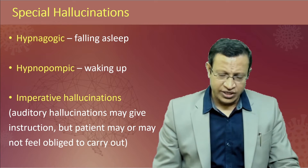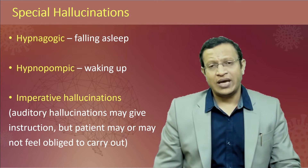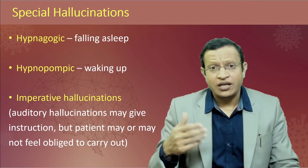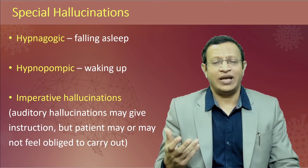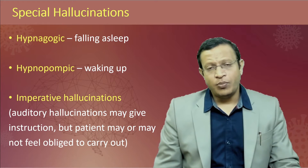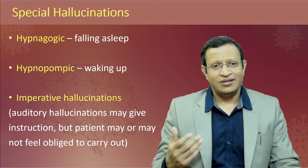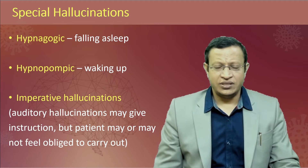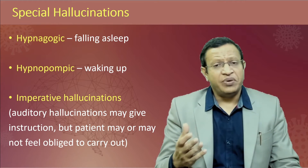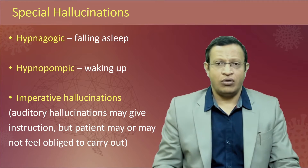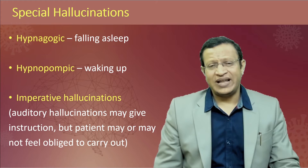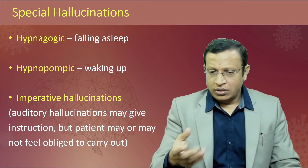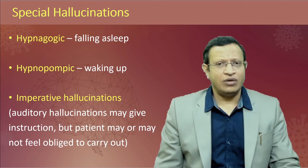Let us understand what are the different types of special hallucinations. First is hypnagogic hallucination — a normal physiological process experienced by all of us. When you are falling asleep, suddenly you feel that you are falling into a well and you suddenly have a startle reflex and wake up. Hypnopompic is when you are waking up from sleep and you get a hallucination. Another very important is imperative hallucination: if a patient has auditory hallucination which gives commands or instructions, but the patient may or may not oblige to carry them out.